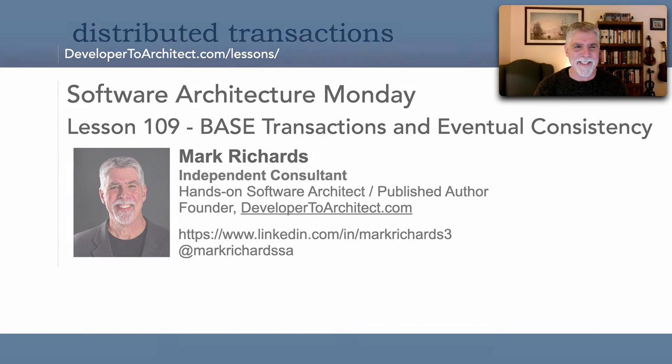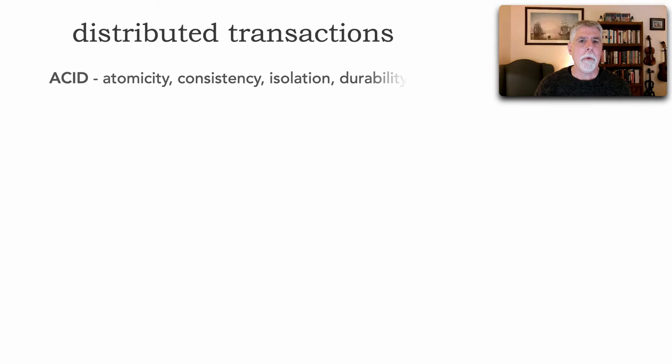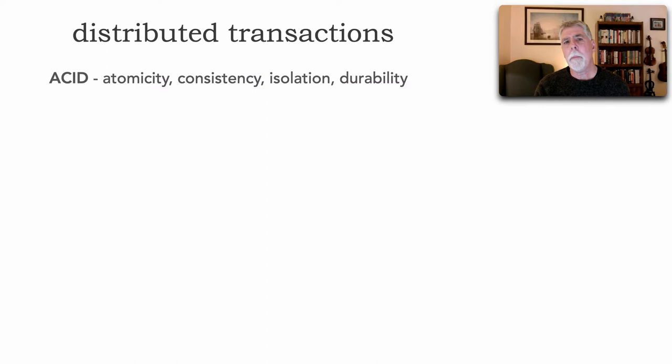When we talk about transactions, normally we refer to what are called ACID transactions — database transactions, where we do commits and also rollbacks. ACID is defined as atomicity, consistency, isolation, and durability. These guarantee that multiple updates, inserts, or actions — write actions to a database — will all be kept in sync, will be durable, and will be isolated from other readers until I do a commit on all of that information. And this is how, for three-plus decades, we've been doing transactions.